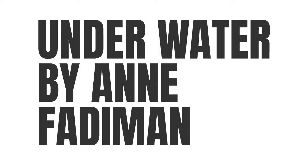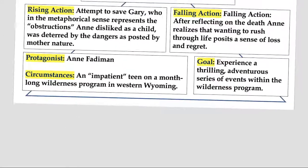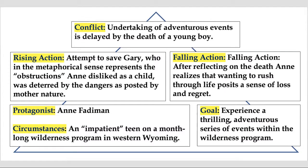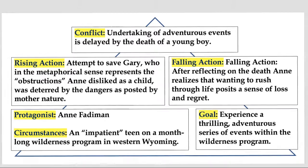Hello everyone. Today we're going to discuss 'Underwater' by Ann Fadiman. Like other stories we've observed, I'm going to continue to integrate the Freytag Pyramid for narrative structure. As you can observe here, we're noticing the same elements: the protagonist and the circumstances, the clearly defined goal of the protagonist, the conflict affecting the reaching of that goal, the rising action, and whether or not we overcome the conflict — the falling action.